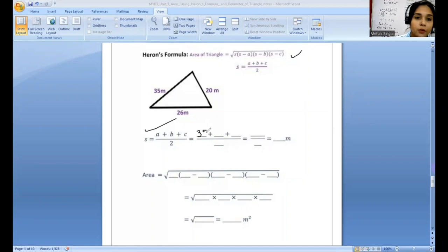The next one, good, 26. What about the third? 20. And here, of course, two, correct. After adding, yes, 81. Then okay, and after division what you're gonna get? Yeah, use your calculators, 40.5 meters, correct.